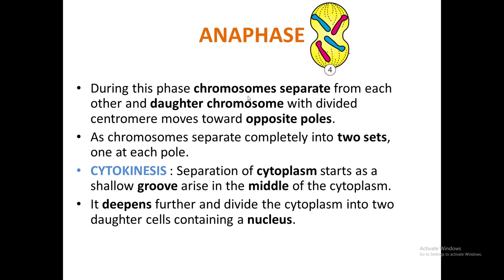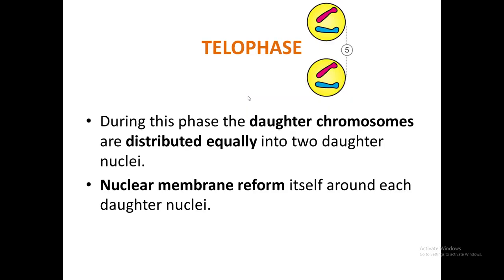Each daughter cell contains a nucleus. With the division of the cytoplasm, the daughter cells separate and each behaves as an individual cell. During telophase, the daughter chromosomes distributed into the two daughter cells are now found in two daughter nuclei. As cytoplasm division is completed, the nuclear membrane starts to reform around each daughter nucleus.